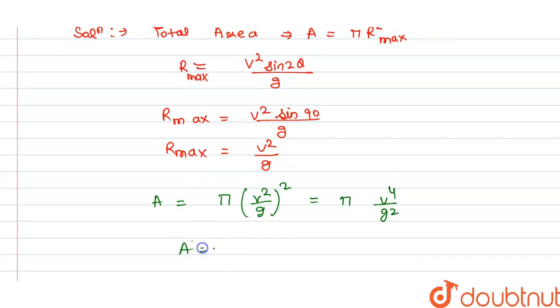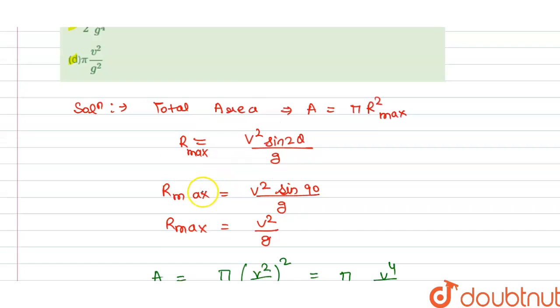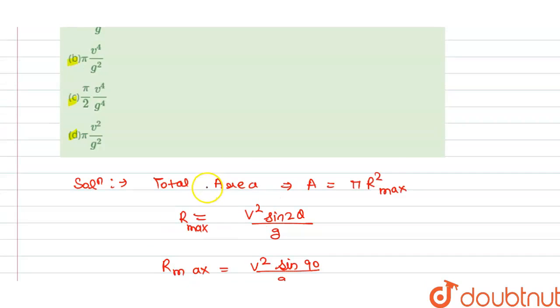Our area is π v⁴ (velocity to the power 4) divided by g² (acceleration due to gravity power square), in multiplication with π here. Now we check which option is correct. We have π v⁴/g², so option B is correct here.